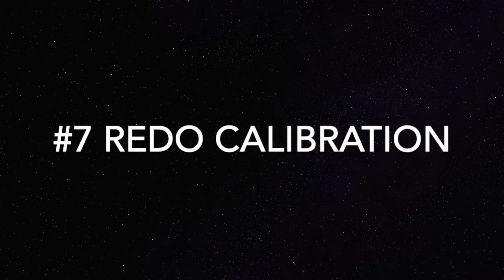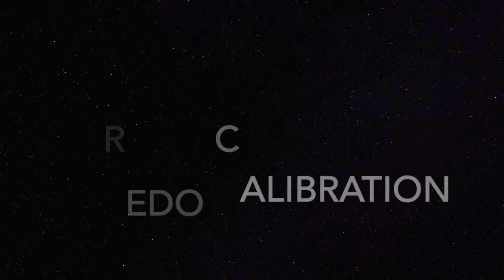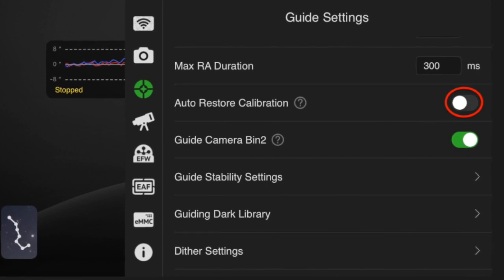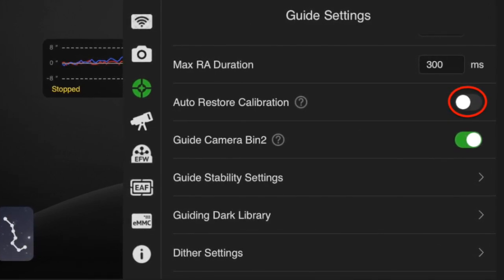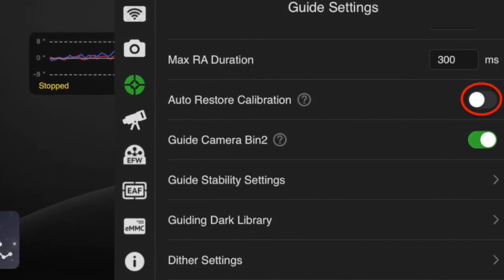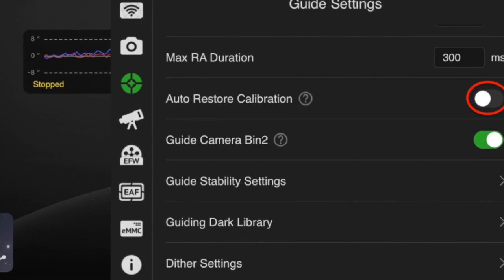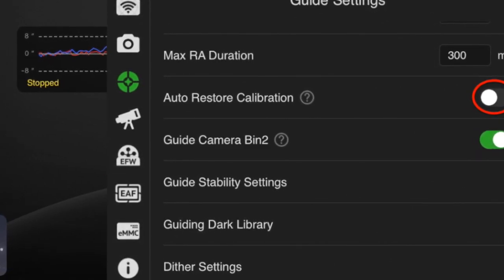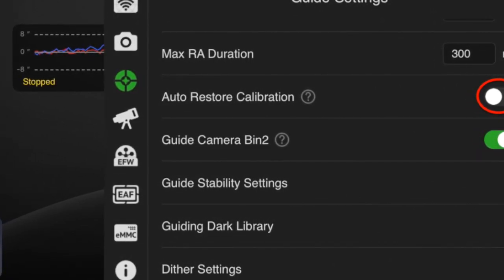Tip number seven, redo your calibration data. If everything is fine and you're auto guiding well, then just keep your calibration data the way it is. However, if something happens and something changes, you may need to redo this data. And this data is critical in order to have good guiding.